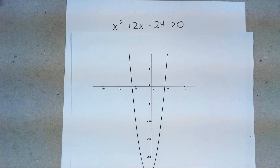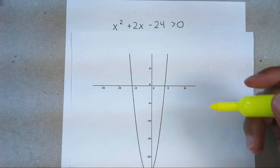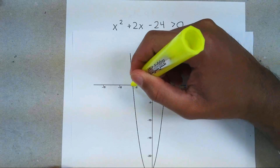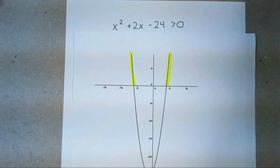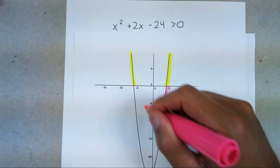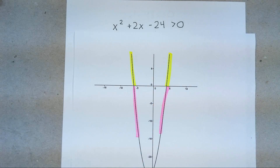If we were to graph x squared plus 2x minus 24, we would get this graph. Whenever you see a question that asks you when is it greater than zero, it's really asking you at what points is your graph going to be above the x-axis. Any time you get a question where it says when is your graph less than zero, it wants to know when it's going to be below the x-axis. Those are the two types of questions: when is your polynomial greater than zero or less than zero, or greater than or equal to, or less than or equal to.